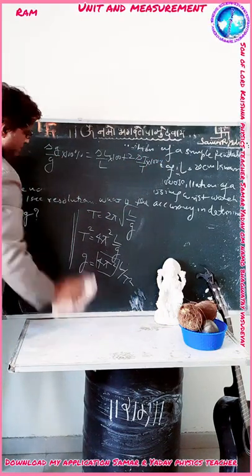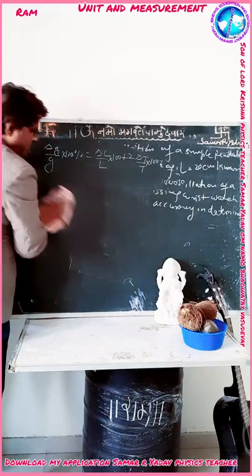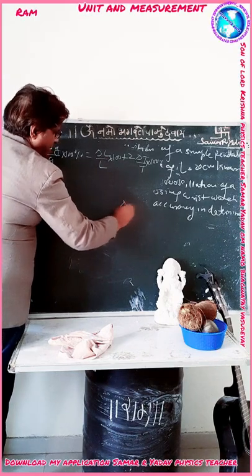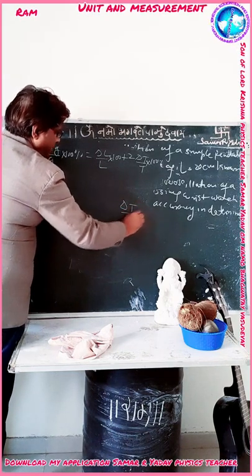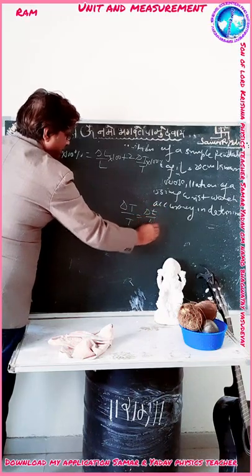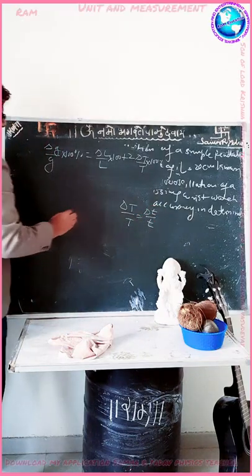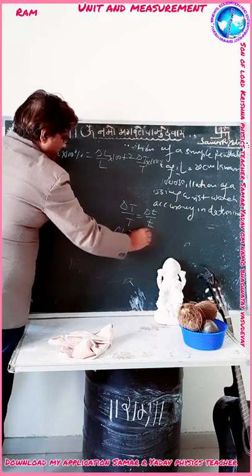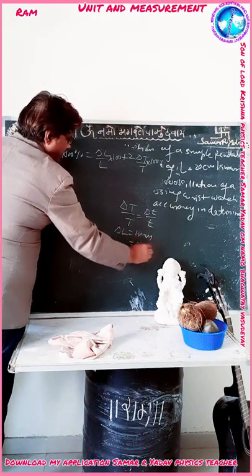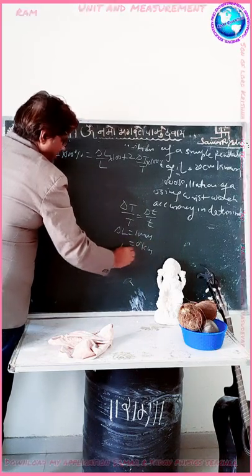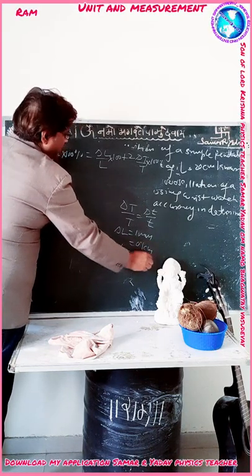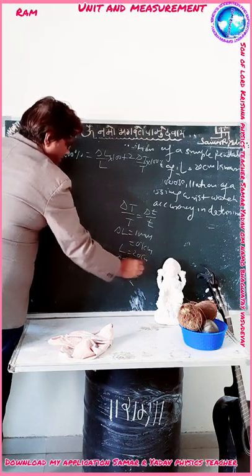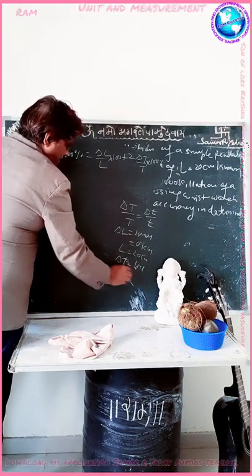The time for 100 oscillations is 90 seconds. Delta L is equal to 1 mm, so we write 0.1 cm, and L is 20 cm. Delta T is equal to 1 second and T is equal to 90 seconds.